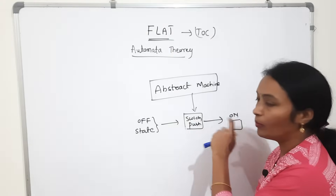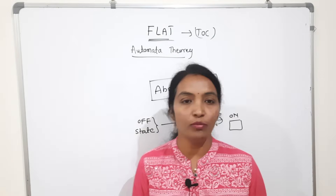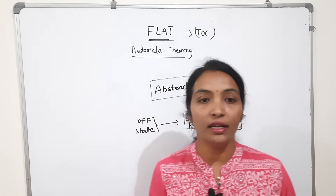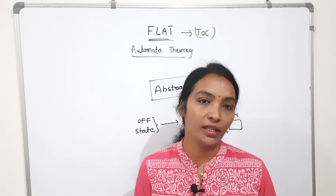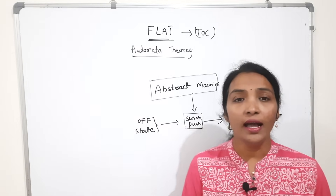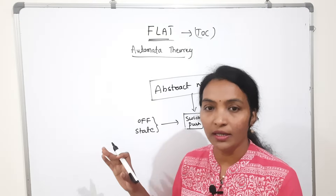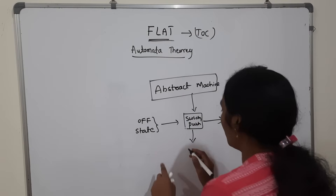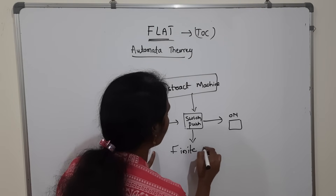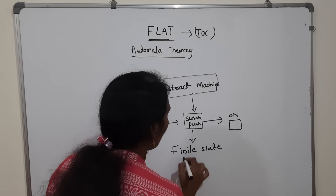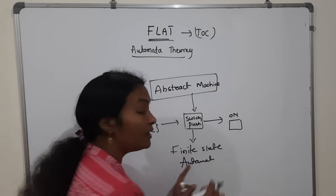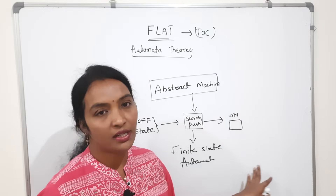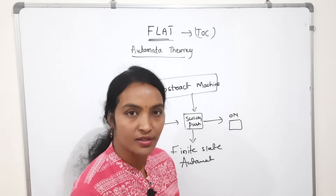How do we mathematically calculate what happens in this abstract machine? What representations exist? How do we mathematically implement this? This implementation is in a finite number of states. The abstract machine has a finite number of states. We call this finite automata. Finite automata has some representations, and I will explain all those representations.